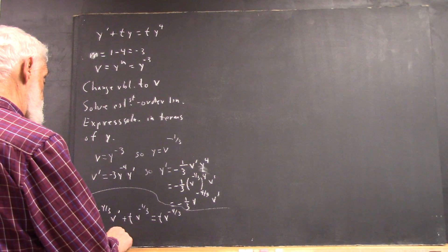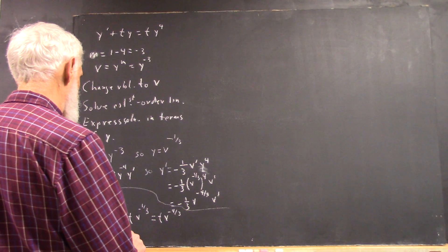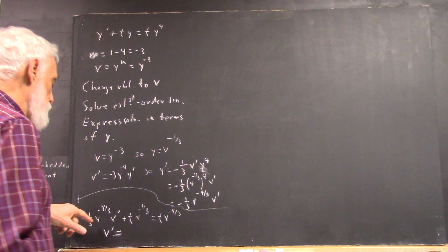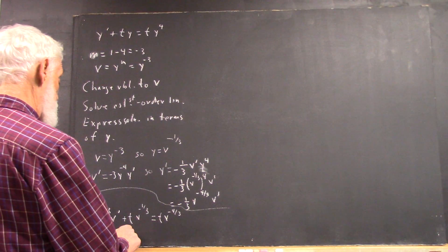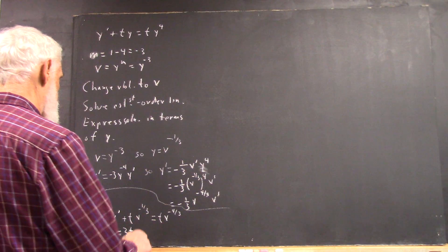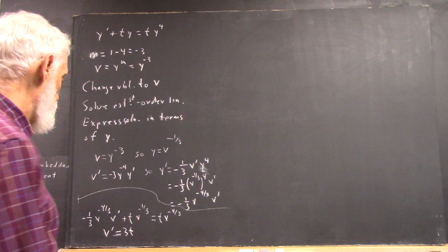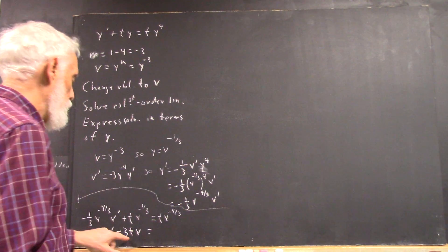And we get v prime equals, it'll be negative three times t. So we'll just write minus three t. And then v to the four-thirds times v to the negative one-third is just v t. And look at that. So far, it's looking linear.